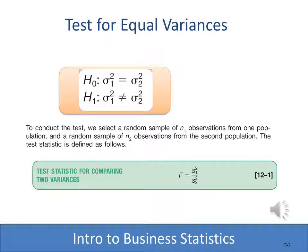The F statistic is still used in hypothesis testing and we're comparing variances. When comparing variances, the null hypothesis is that there is no difference in the variances — variance of sample one equals variance of sample two. The alternative hypothesis is that they're not equal. The F is computed by taking the variance of sample one divided by the variance of sample two.